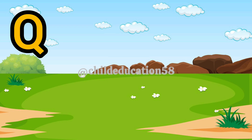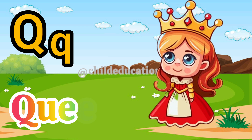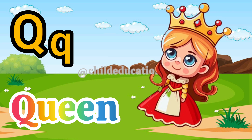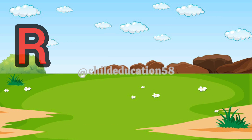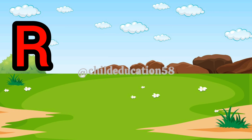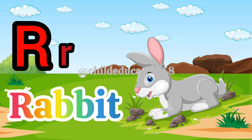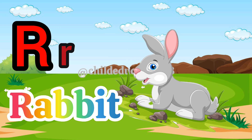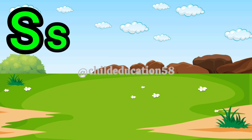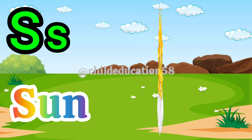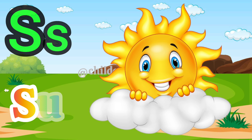Capital R, small r, R for rabbit. Capital S, small s, S for sun. Capital T, small t, T for table.